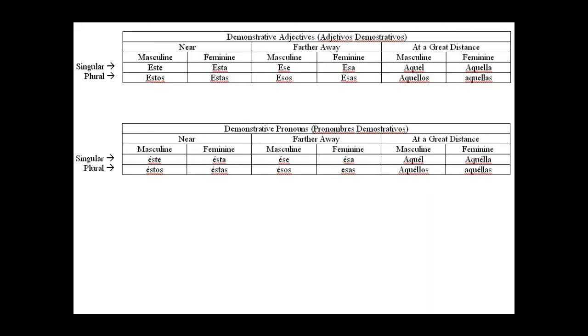Alright, so in front of you, you have two charts. The first one, the one at the top is the chart on demonstrative adjectives. Remember that the demonstrative adjectives are the words this, these, that, and those.